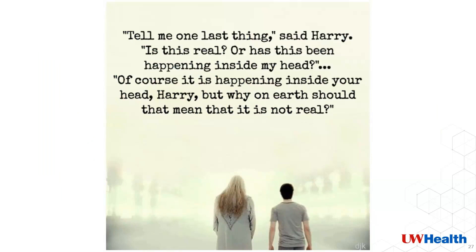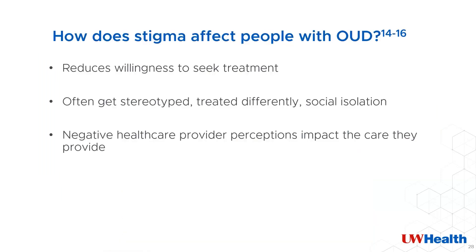I implore you to recognize that just because something is happening inside someone else's head, it does not make it any less real. How does stigma affect people with opioid use disorder? It reduces their willingness to get help — they could be worried that their concerns may be discounted, they may be treated poorly, and made to feel judged. Many experience social isolation from their friends, family, and even the healthcare system. The implicit bias that healthcare workers have might impact the care they provide and continue to feed into the cycle that keeps patients unable or unwilling to get help.